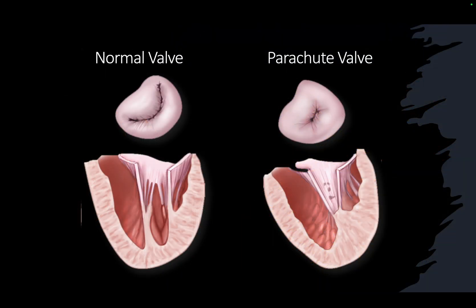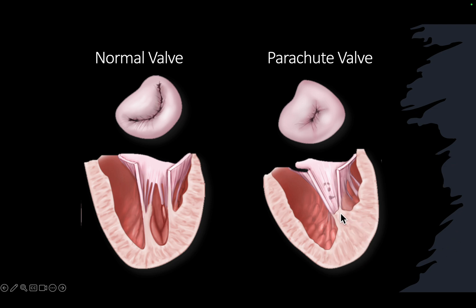The next variety is a parachute valve. What is a parachute valve? In a normal valve, you have chordae attached to their respective papillary muscles. The hallmark that differentiates it from a hammock or arcade valve is that there is a single papillary muscle. The chordae are attached to this single papillary muscle, and depending upon the fusion of the chordae, the degree of stenosis would vary.